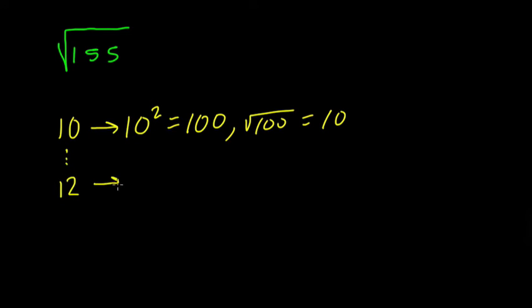If I go up to 12, I square that. 12 squared is 144, and we're much closer now. This means that the square root of 144 is 12, but the square root of 155 is greater than the square root of 144.